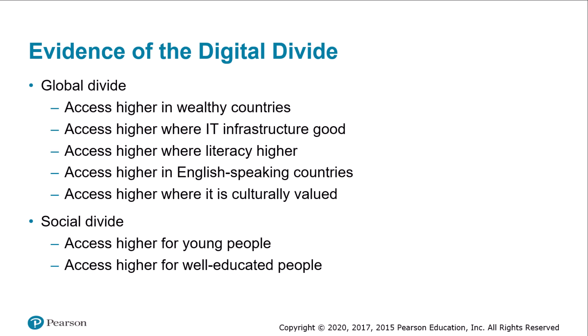Even within wealthy countries such as the United States, internet use varies significantly by demographics like age, wealth, and educational achievement. The Pew Internet poll from early 2018 found that online access varied from 98% of 18-to-29-year-olds to 66% of those 65 and older. Fully 98% of adults in households with incomes of at least $75,000 use the internet, compared to 81% of those earning under $30,000. While 97% of college graduates are online, only 65% of high school dropouts go online. The less connected groups are gradually catching up.